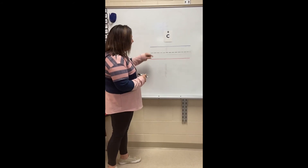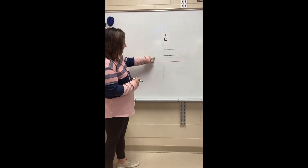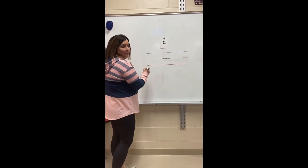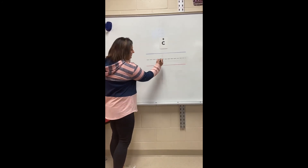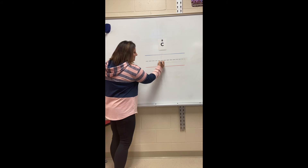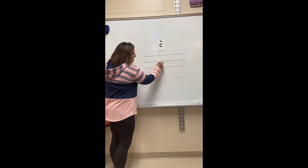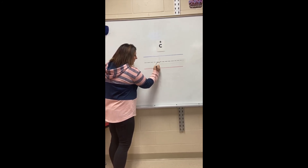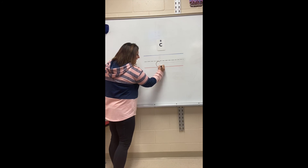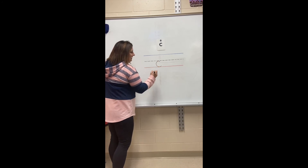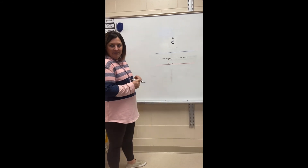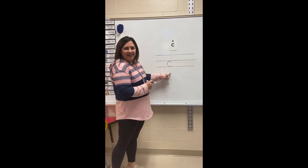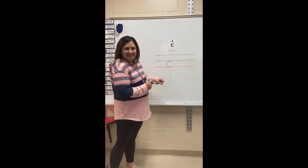I'm going to show you how to draw a picture of the k sound. When I draw the k sound, I'm gonna start at my midline and I'm going to make a circle going towards the left. I want to make it touch that bottom line and then I'm going to stop. That is the drawing of a k sound.